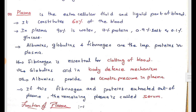When we go into the subtopics, plasma is one component of blood. It is almost 60 percent of blood. Within plasma, 90 percent is water, 7 percent protein, almost 1 percent salt, and nearly 0.1 percent glucose. The remaining proteins that we can see in plasma are albumins, globulins, and fibrinogen.